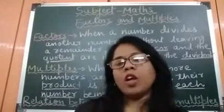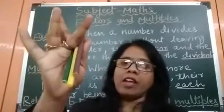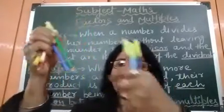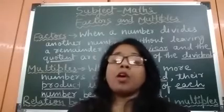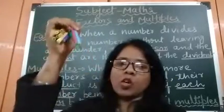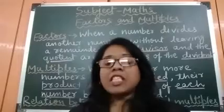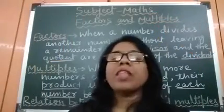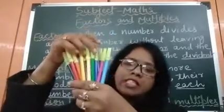6 multiplied by 2 is 12. Now I am going to make bunches of three sketch pens: 1 bunch, 2 bunches, 3 bunches, 4 bunches — that means 3 multiplied by 4 is 12. Now I am going to make bunches of 4 sketch pens: 1 bunch, 2 bunches, 3 bunches — so 4 multiplied by 3 is 12. Now bunches of 6: 6 and 6, that is 12, so 6 twos are 12.